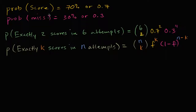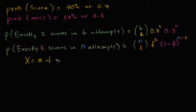Now that we've spent a couple of videos exploring a scenario where I'm taking multiple free throws and figuring out the probability of making K of the scores in six attempts or in N attempts, let's actually define a random variable using this scenario and see if we can construct its probability distribution. We'll actually see that it's a binomial distribution. So let's define the random variable X as equal to the number of made free throws when taking six free throws — so it's how many of the six do you make?